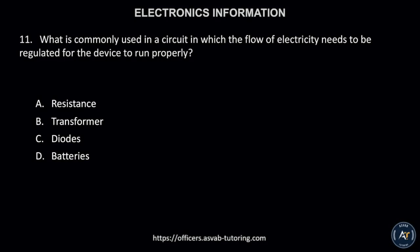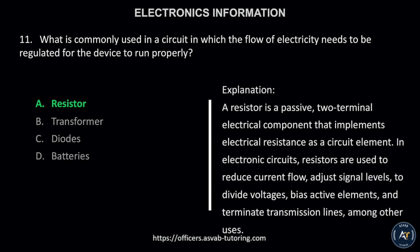Number 11. What is commonly used in a circuit in which the flow of electricity needs to be regulated for the device to run properly: A. Resistance, B. Transformer, C. Diodes, or D. Batteries? The correct answer is letter A, resistance. A resistor is a passive, two-terminal electrical component that implements electrical resistance as a circuit element. In electronic circuits, resistors are used to reduce current flow, adjust signal levels, divide voltages, bias active elements, and terminate transmission lines, among other uses.